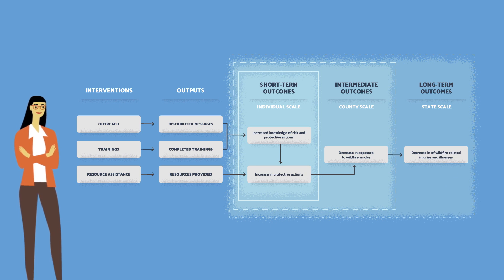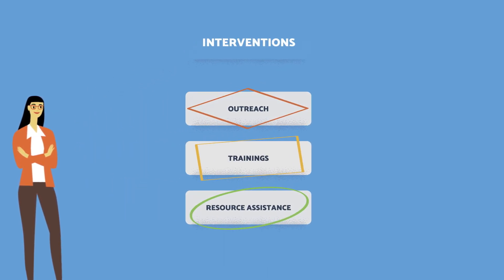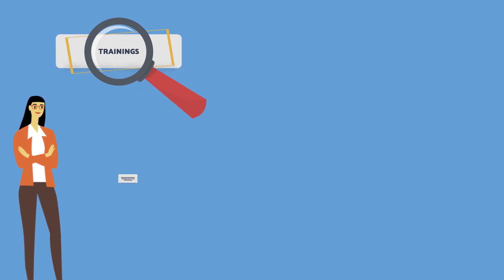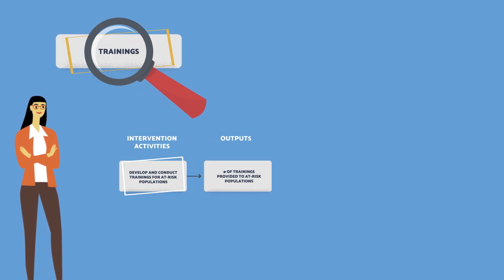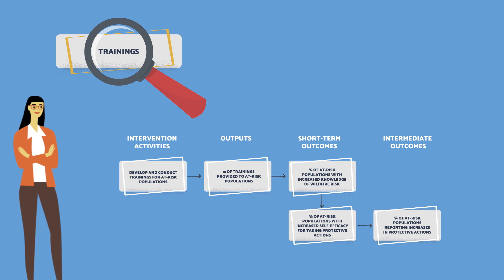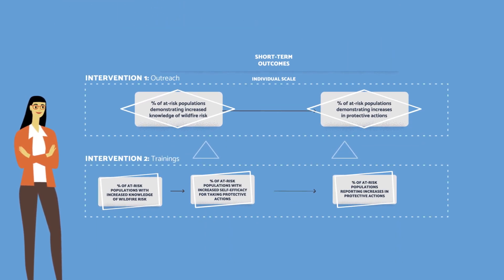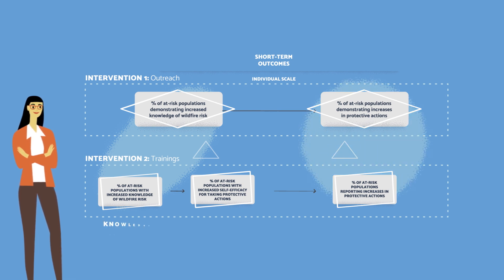Because her program includes three major interventions — outreach, training, and resource assistance — Elaine updates her larger model to show how the interventions fit together. She then breaks it into three intervention-specific logic models. To better describe each specific intervention, Elaine uses different shapes to create a separate, smaller logic model, depicting how each intervention intends to achieve its specific outcomes. This nested approach provides a clearer picture of how the program is expected to work, and allows Elaine to show how data from different interventions can feed into the same outcome category, such as knowledge increase or behavior change.